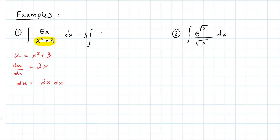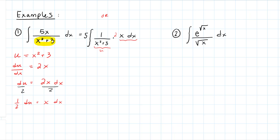Now I'm going to rewrite this so we can see how to make the substitution. I'll pull the constant 5 outside the integral — we can pull constants outside integrals. This gives 1/(x²+3) times x dx. Here is my u, so I'll substitute u in there. I have x dx, and over here du = 2x dx, so dividing both sides by 2 gives ½ du = x dx.